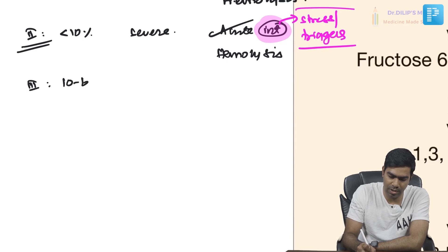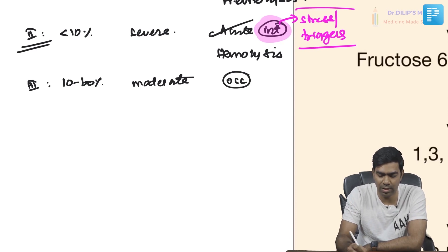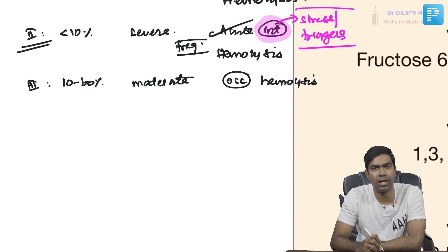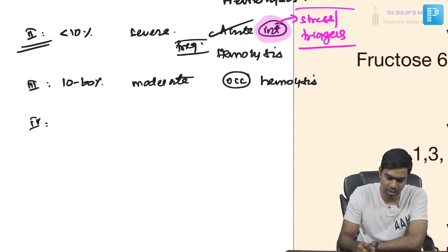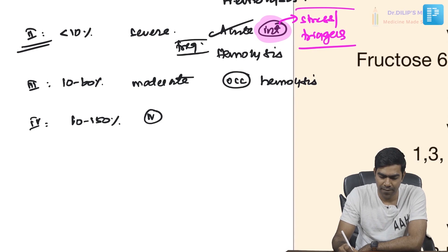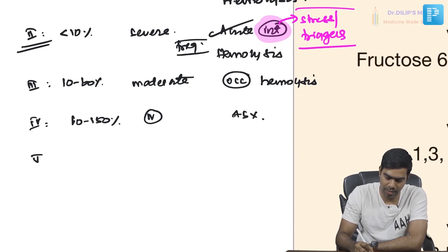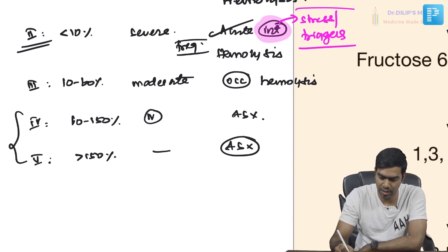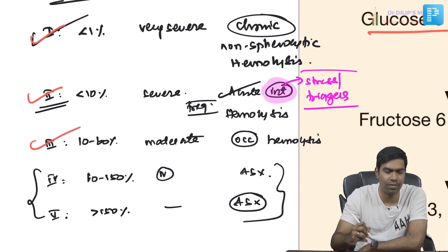Class 3 has 10–60% enzyme activity, moderate severity, and hemolytic anemia occurs only with severe oxidant stress — occasional rather than frequent. Class 4 is 60–150% activity, essentially normal and completely asymptomatic. Class 5 has greater than normal enzyme activity and is also completely asymptomatic. Among the deficiency classes, the first three are clinically important.